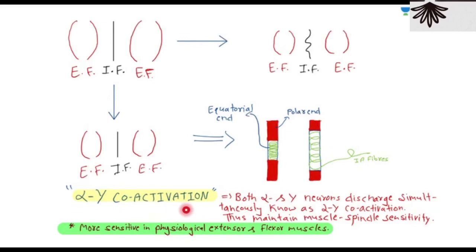Muscle spindles are more sensitive in physiological extensor muscles — those working against gravity that help maintain posture. Gamma activation is very sensitive in these anti-gravity muscles, keeping intrafusal fibers sensitive, which maintains coordination and proprioception. The cerebellum continuously receives proprioceptive input: conscious proprioception travels through the dorsal columns and unconscious proprioception through the spinocerebellar tracts. If the cerebellum is lesioned and cannot process proprioception, gamma activation and posture control cannot be maintained.